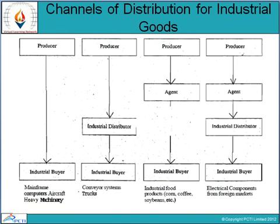For industrial goods, four channel types exist: producer to industrial buyer (mainframe computers, aircraft, heavy machinery); producer to industrial distributor to industrial buyer (conveyor systems, trucks); producer to agent to industrial buyer (industrial food products like corn, coffee, soya beans); and producer to agent to industrial distributor to industrial buyer (foreign markets, electrical components such as TVs, fridges, and mobile phones).